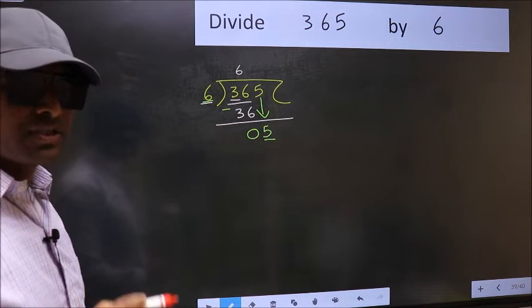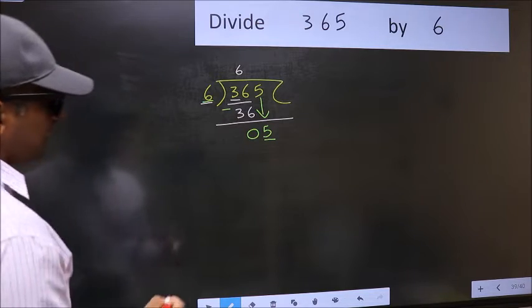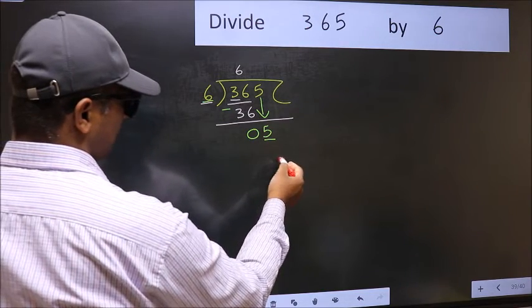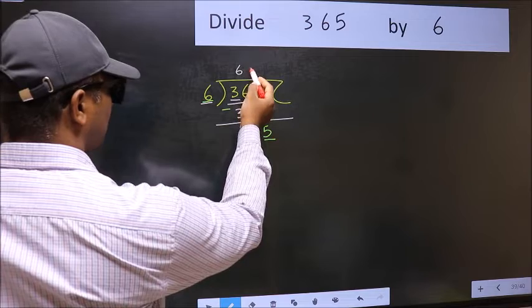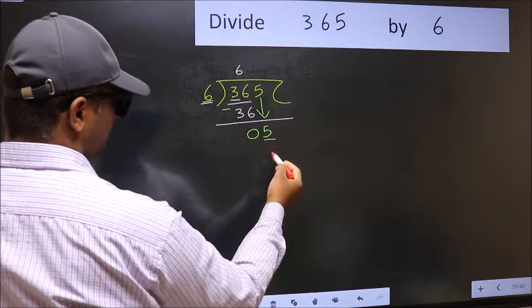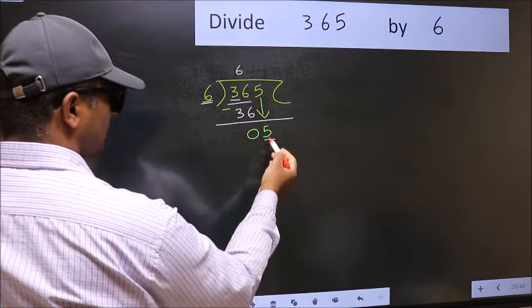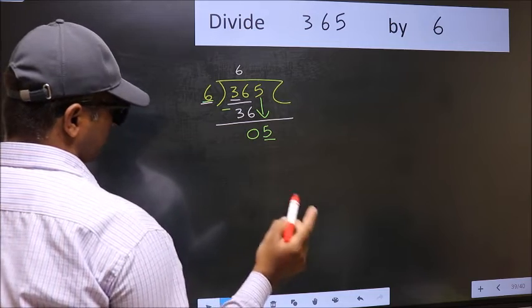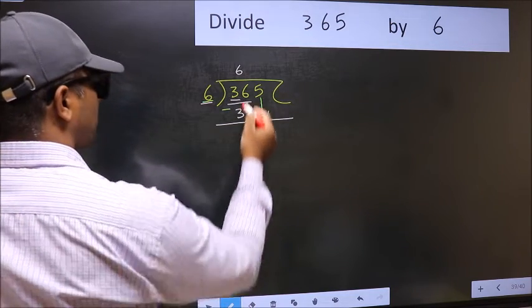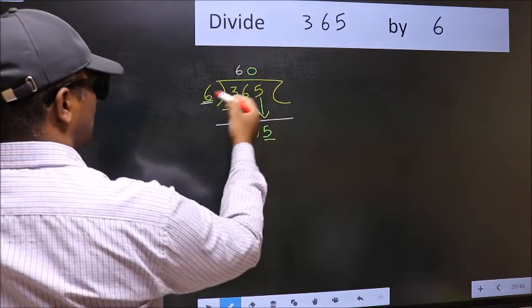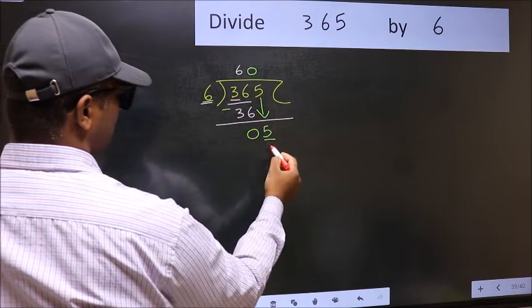Instead, what you should think of doing is, what number should we write here? If I take 1, we will get 6. But 6 is larger than 5. So what we should do is, we should take 0. So 6 into 0 is 0.